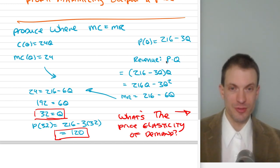Why? Well, revenue is going to be price times quantity. Price, we solve for that, 216 minus 3Q times quantity Q. Distributing, we have 216Q minus 3Q squared. Oh, this Q squared is key.